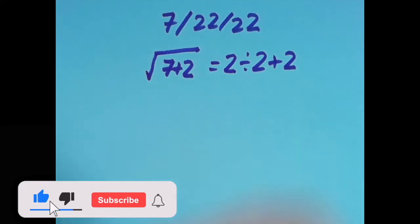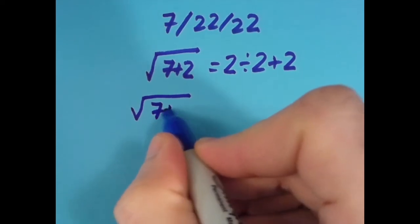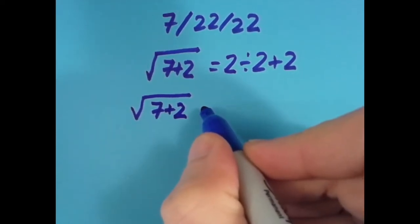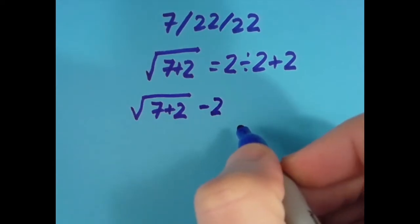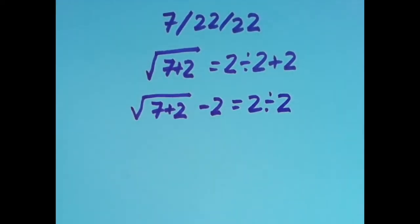I then tried it a couple of other ways. I tried to move the equal sign around a little bit and here I started with the same thing. I said the square root of 7 plus 2, so that's going to give us 3 once again, and if we subtract 2 from that 3 we're going to get 1, and that's going to be equal to 2 divided by 2, which is also 1.